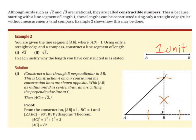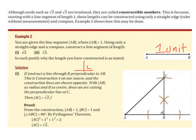Our solution: construct a line through point B, perpendicular to AB. If two lines are perpendicular, they meet at right angles. This is construction 4 on our course, and the construction lines are shown opposite. Here we have the line segment AB, here we have the point B, and here we have a dotted line that goes through B perpendicular to AB.